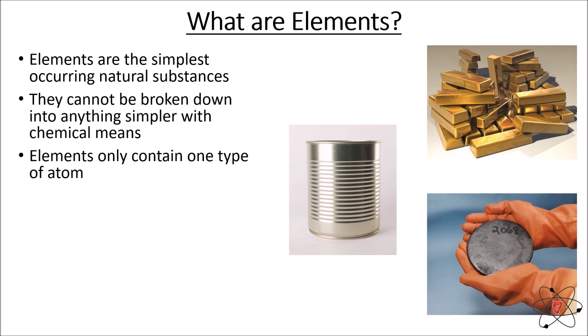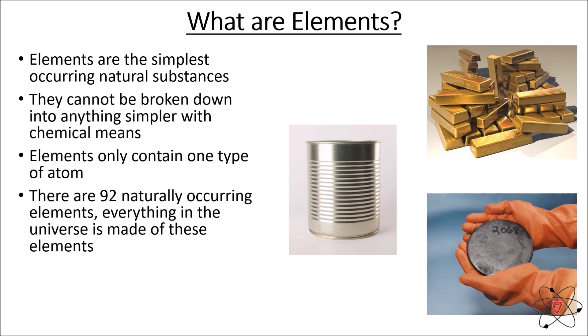Importantly, elements can only contain one type of atom — compounds can contain two or more, but elements only contain one type. In the universe there are 92 naturally occurring elements, meaning everything you see — the earth, you, your computer — is made up of these 92 elements and nothing else. Think of it like language: all the millions of words in English are made from just 26 letters. Similarly, 92 elements make up every single thing in the universe.